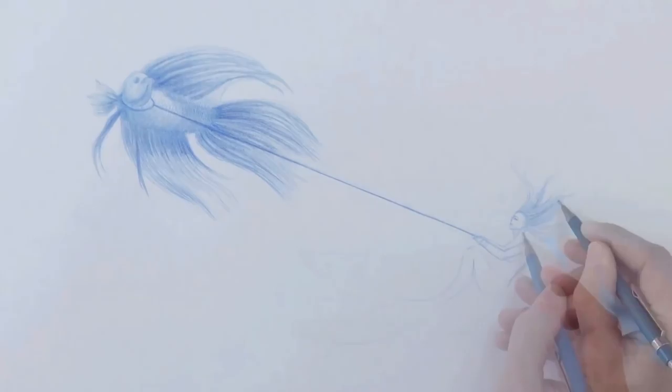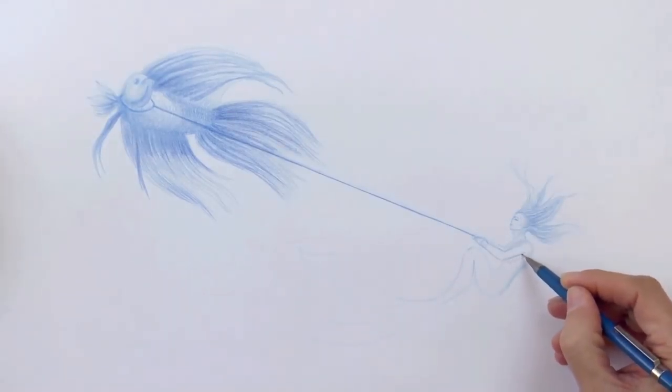Now we do some shading on the hair, on the neck, the body. We create the volumes with light and shadow. It's like magic!